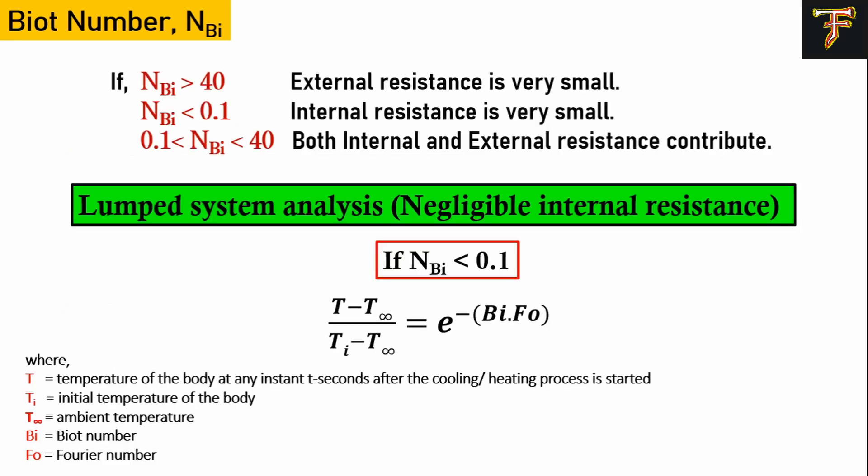Now we have a number of different values of Biot number. If our Biot number is greater than 40, what does it mean? It basically means that the external resistance is very small. By external resistance, we mean that the temperature gradient from the surface of the metallic ball to the ambient will be negligible in this case.